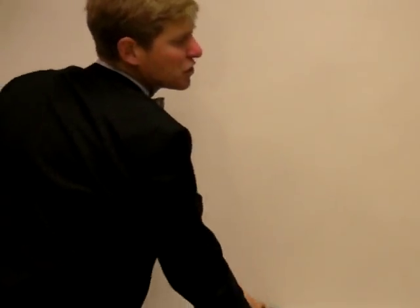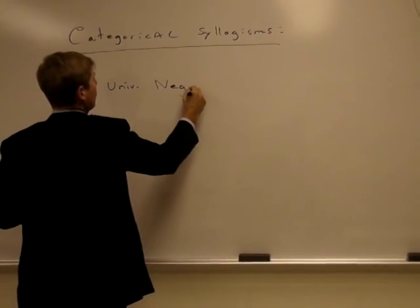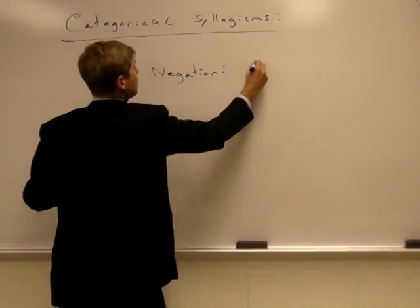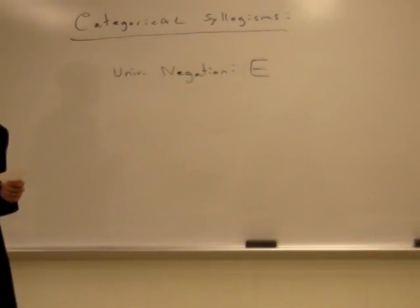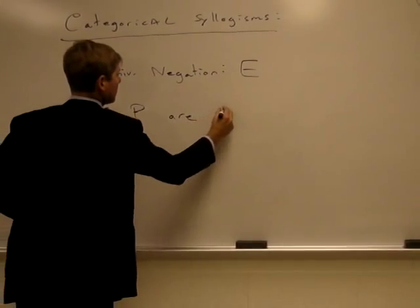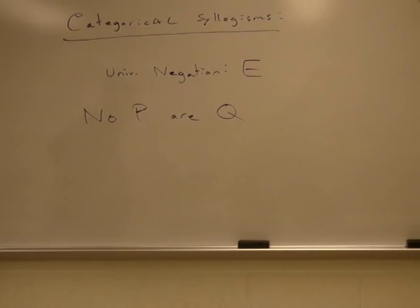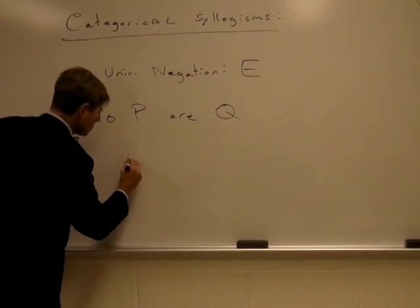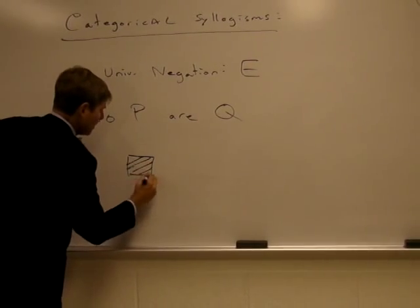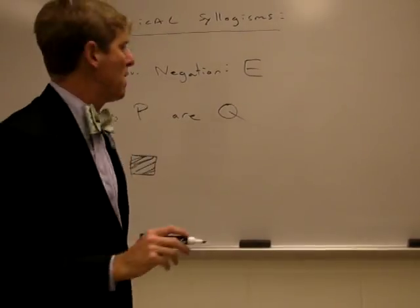The second kind of statement we call an E-statement. An E-statement is known as a universal negative or universal negation. This is a universal statement, so similarly, we are going to shade in the area in which there are no members.